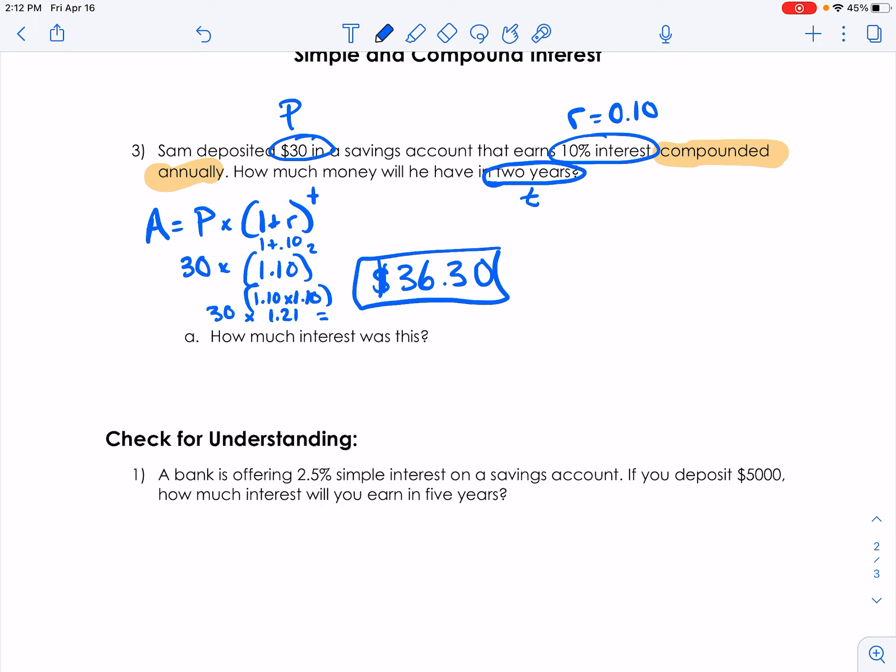Our second question here says, how much interest was this? So if the amount I have now is $36.30 and I take away the amount I started with, the principal, that's going to give us the amount of interest we earned.